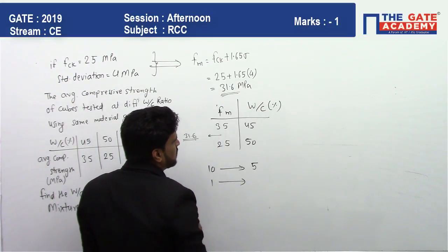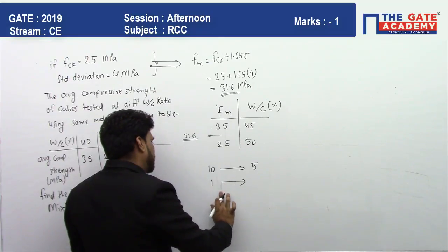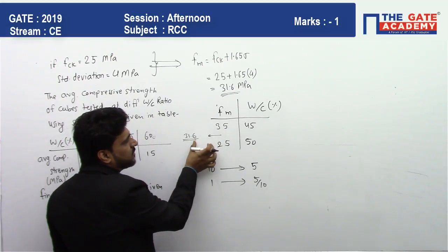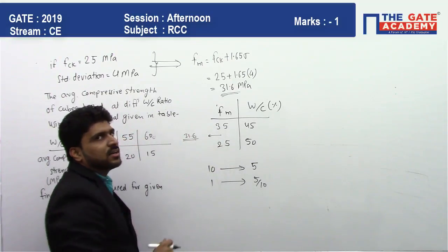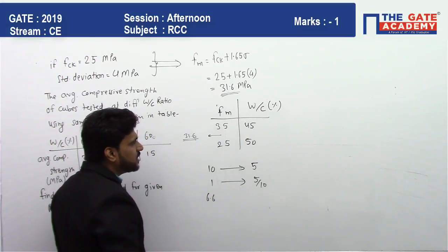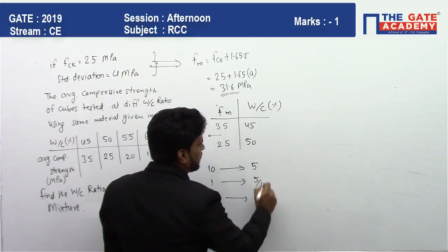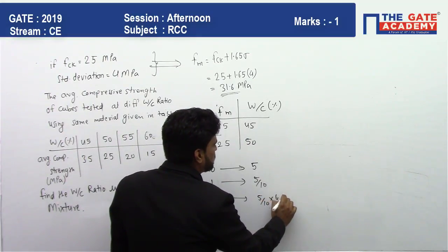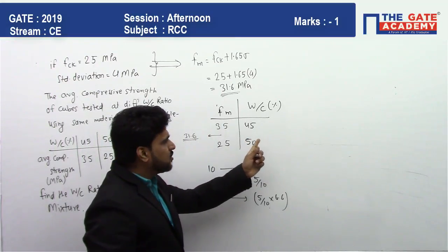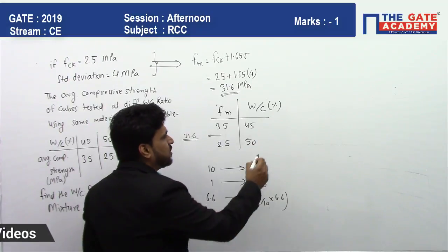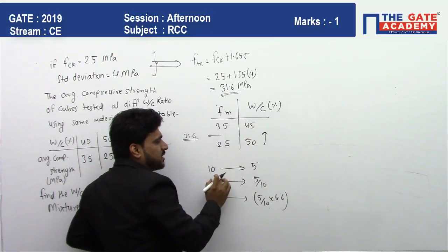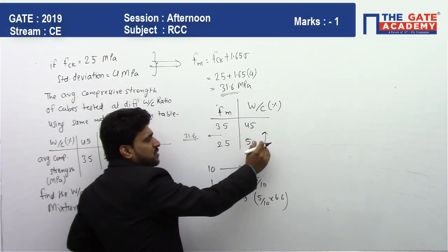If it has been increased by 1 value, it will be decreased by 5 by 10. Now what is the increment we need? 25 to 31.6, means we need the increment of 6.6. So what will be the difference created? Into 6.6. So this much difference we will create here. And you know the value is decreasing from here to here. We are going this way, means 10 increasing here, 5 decreasing here. If 1 increases here, so 5 by 10 decrement here.